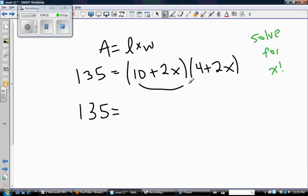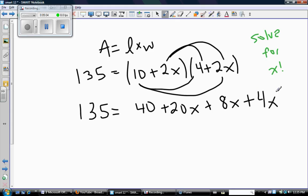So I'm going to multiply these brackets together. So 10 times 4 is 40. 10 times 2x is 20x. 2x times 4 is 8x. And 2x times 2x is 4x squared.